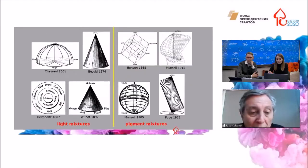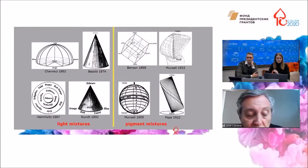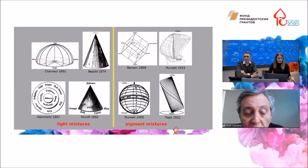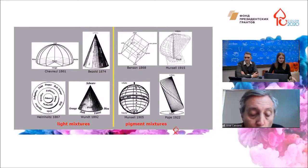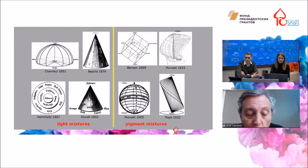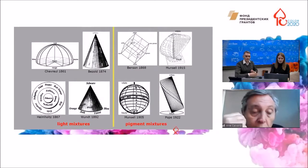Once this difference was clear, the systems representing light mixtures and those that respond to pigment mixtures started to adopt different shapes. Conical shapes for the former, typically with one vertex where black is located, and approximate double cones or spherical shapes with two poles for white and black for the second ones.